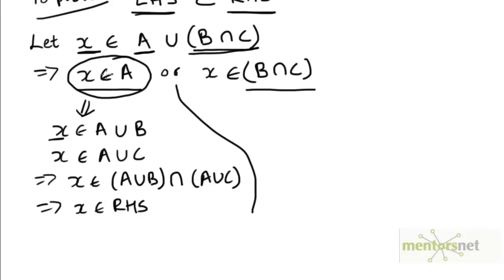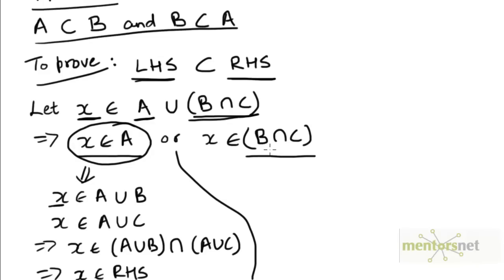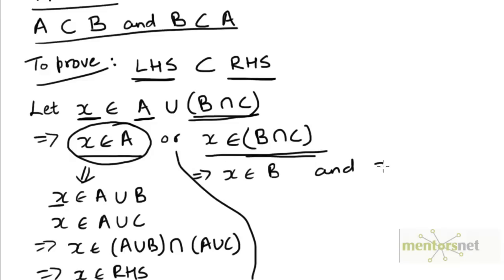Now let's consider the other possibility. If x does not belong to A, it must belong to B intersection C, because if x belongs to their union it must belong to at least one of the two sets. If it does not belong to A, then it must belong to B intersection C — that is, it must be an element common to both B and C. This means x must belong to B and x must also be an element of C.